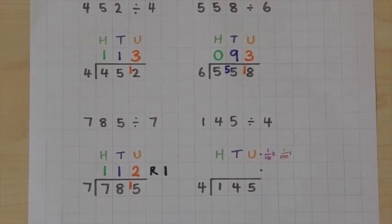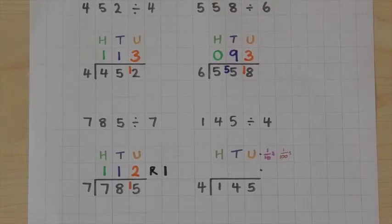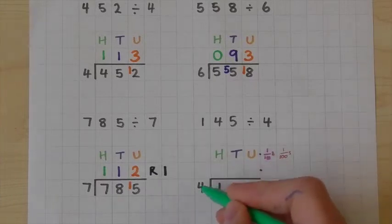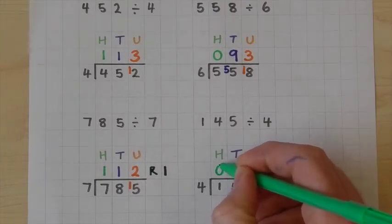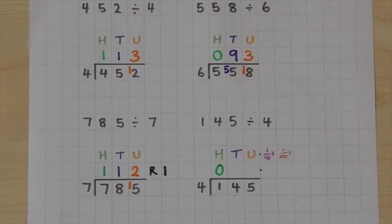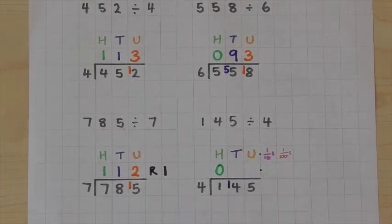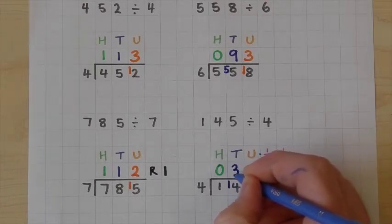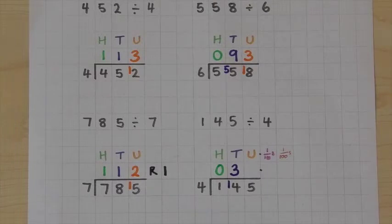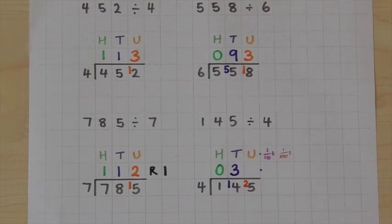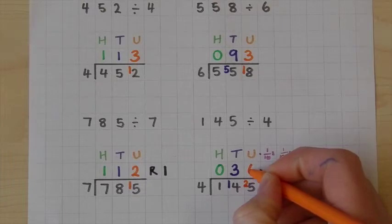Looking at the next example, once again we are going to have a remainder, but this time we are going to turn the remainder into a decimal. We start in exactly the same way, swapping our numbers around. Starting on the left hand side: 4 goes into 1 zero times with one remaining. So we regroup that one and put it with the tens. 4 goes into 14 three times with two remaining. We regroup that two with the units — 25 units. 4 goes into 25 six times with one remaining.